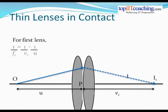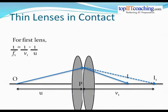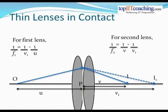For the first lens: 1/f1 = 1/v1 − 1/u, where f1 is the focal length of the first lens, v1 is where the image after refraction from the first lens is formed, and u is the object distance. Now this image I1 will act as an object for the second lens, and then image I will be formed after refraction from the second lens at a distance v from the lens system. So the object distance is u and the image distance is v. This distance v1 will be the object distance for the second lens. For the second lens: 1/f2 = 1/v − 1/v1.